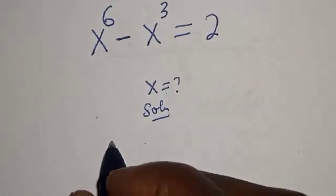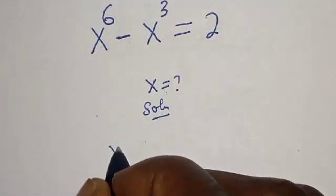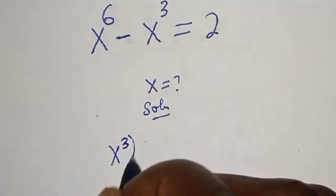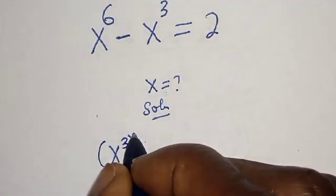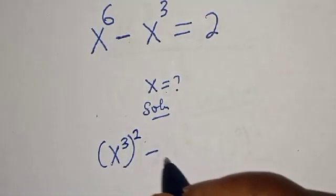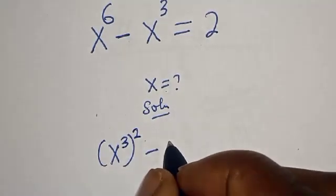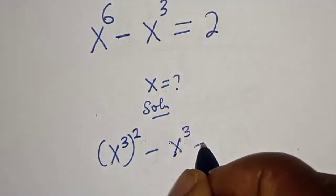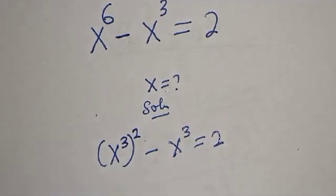Solution: s raised to power 6 can be written as s raised to power 3, squared, minus s raised to power 3, is equal to 2.